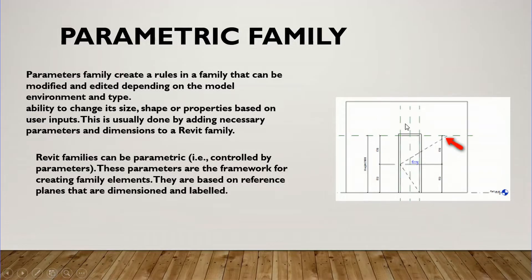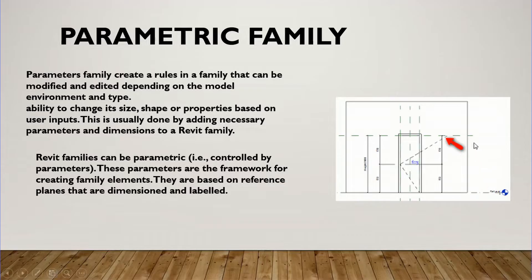For example, if this is a door and you want to give some specific height and width, you can create parameters like length to save size. You can edit these depending on your design and size accordingly, saving a lot of time in your project. Revit families can be parametric — these parameters are the framework for creating family elements, based on reference planes that are dimensioned and leveled. We'll see how to create a basic parametric family using a table.